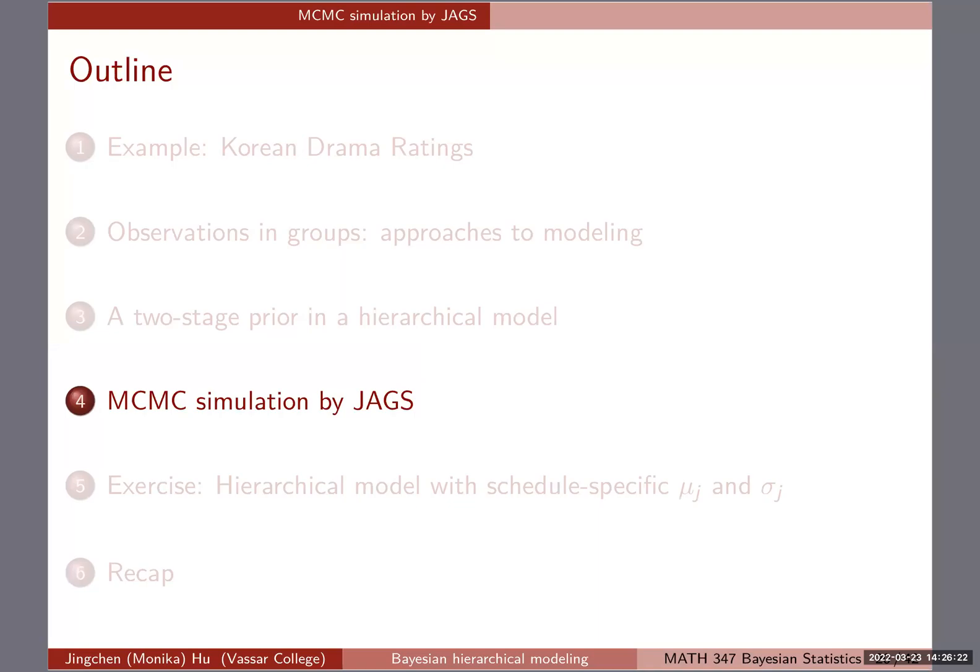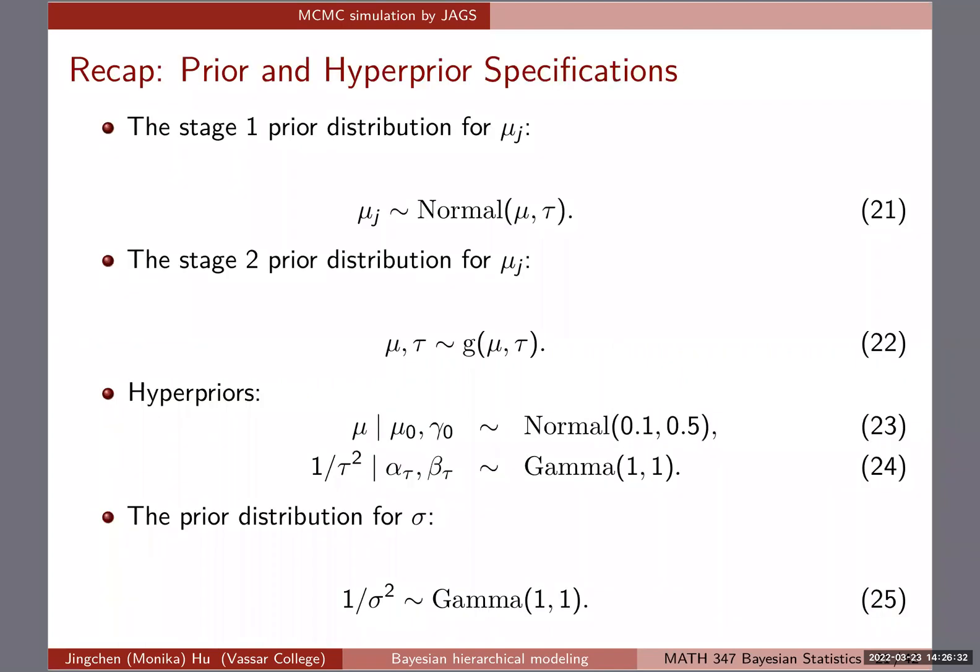Let's talk about how to write sound JAGS code to do the MCMC simulation, and then any time left, we'll try to work on lab three a little bit more as well. So the prior and hyperprior specifications, this is similar to the previous slide, but now I'm actually giving particular values for those hyperpriors for mu and tau squared, as well as this one over sigma squared as well.